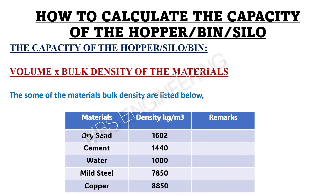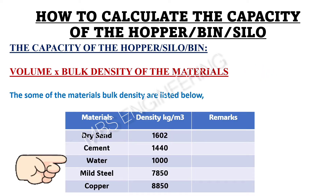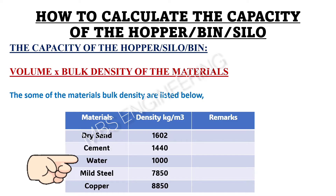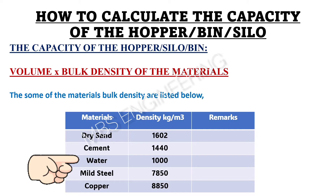Next, we learn about how to calculate the capacity of the hopper, silo, and bin. The capacity of the hopper, silo, and bin is: the volume of the hopper, silo, or bin multiplied by the bulk density of the materials. Some of the materials, like dry sand, cement, water, mild steel, and copper, bulk density details are listed below.